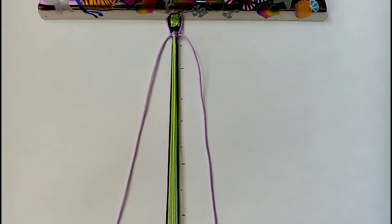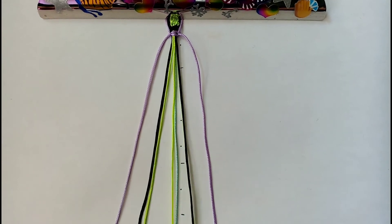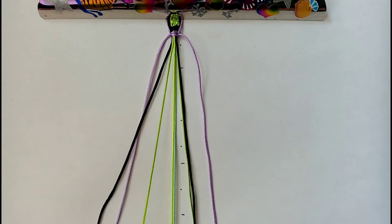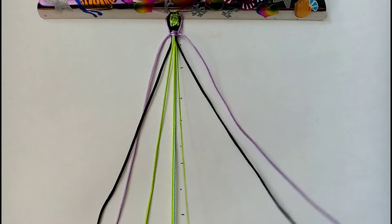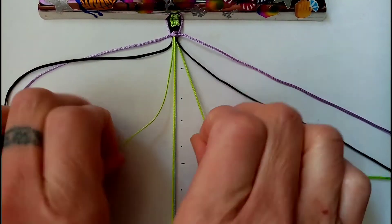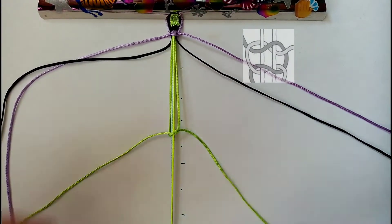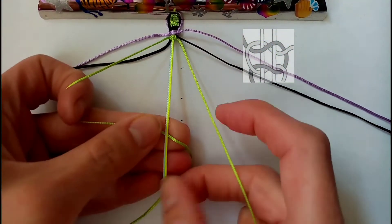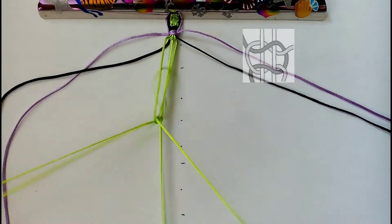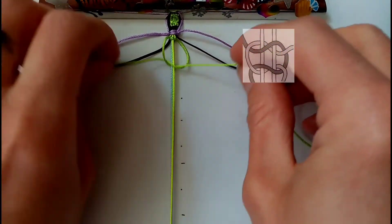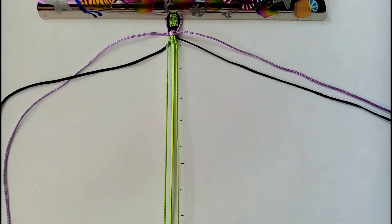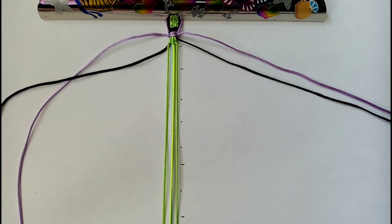And this is the sequence you want to repeat all the way down so you want to go back to what you did in row 1 and taking the cords in positions 3 and 6 again just using these you want to do a square knot over the cords in positions 4 and 5 and then clipping these to the board with the rest of the holding cords.